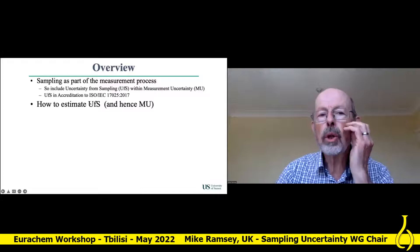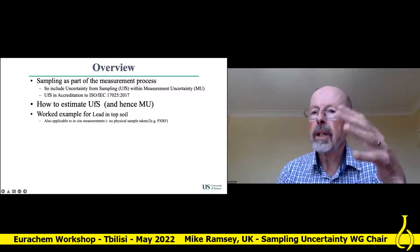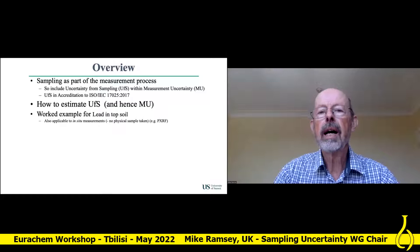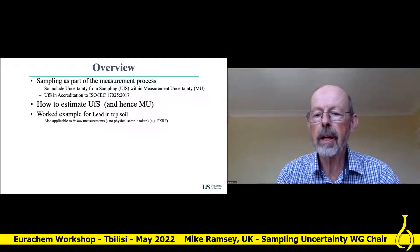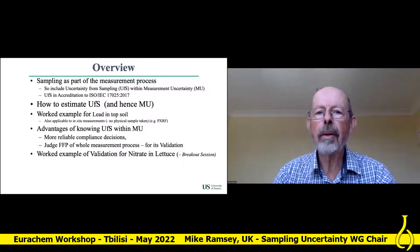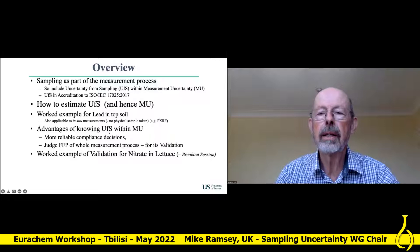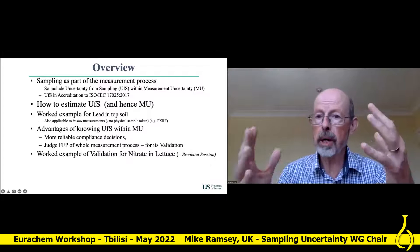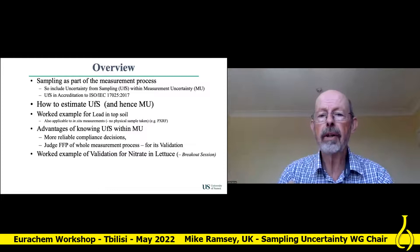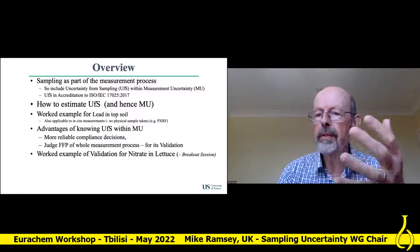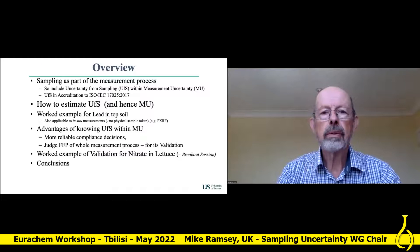I'm going to talk about how to estimate uncertainty from sampling and hence measurement uncertainty. I'll discuss a worked example for lead in topsoil. This is ex-situ measurements but it also applies to in-situ measurements. Then I'll talk about the advantages of knowing measurement uncertainty that includes uncertainty from sampling — more reliable compliance decisions and judging the fitness for purpose of the whole measurement process instead of just the analytical part for validation. I'll give an example of how you'd apply this to nitrate in lettuce as a precursor to the breakout session this afternoon, and then some conclusions.